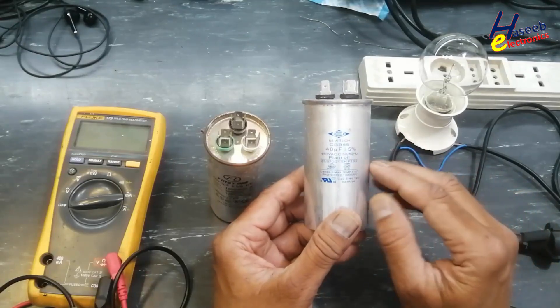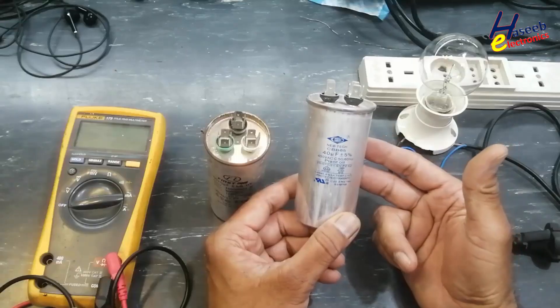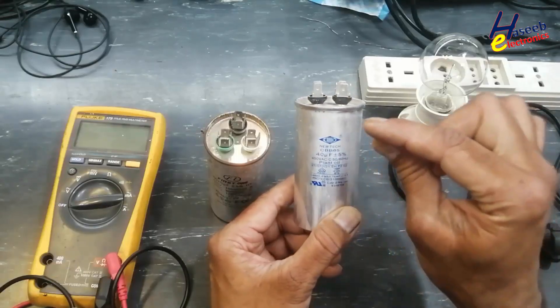I have this 40uF capacitor used with AC compressor in outdoor unit. How to test this capacitor?